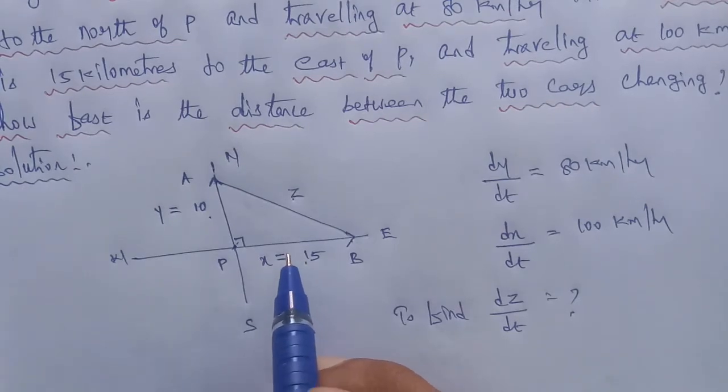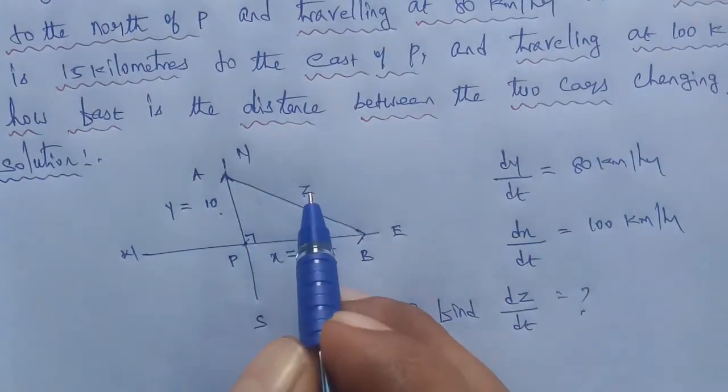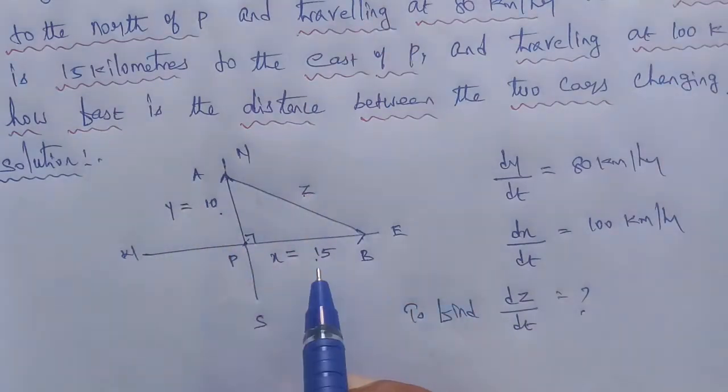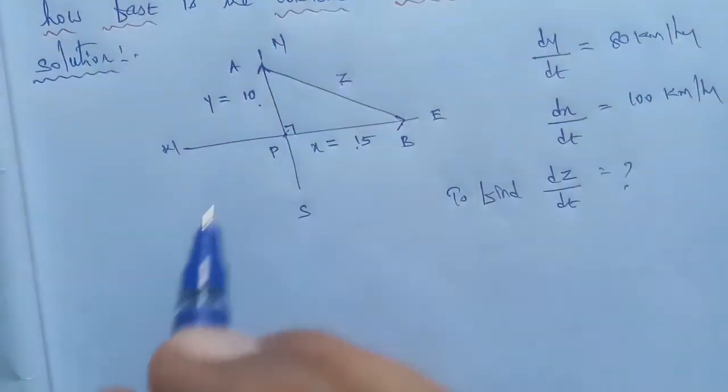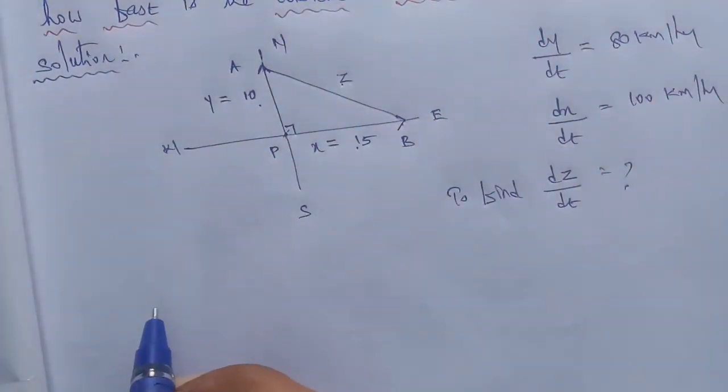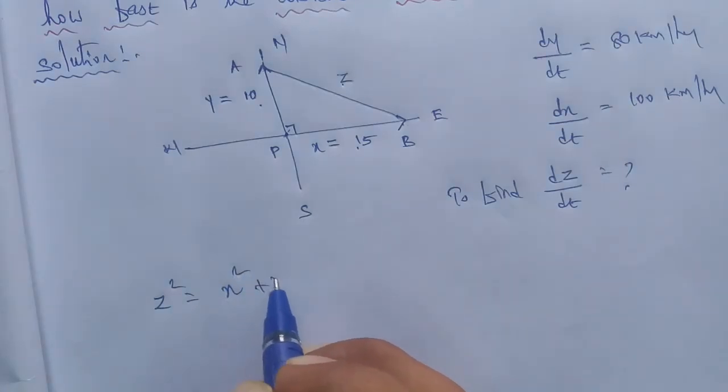By Pythagorean theorem, square on the hypotenuse is equal to the sum of the square of the other two sides. So z square is equal to x square plus y square.